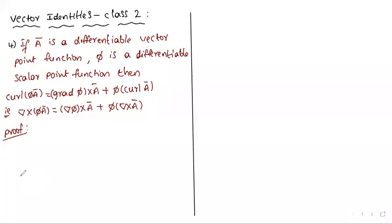Welcome to the math class. I am discussing vector identities, class 2. We already discussed three vector identities in earlier classes. This is the fourth property: if Ā is a differentiable vector point function and π is a differentiable scalar point function, then curl(πĀ) equals grad(π) cross Ā plus π into curl(Ā).